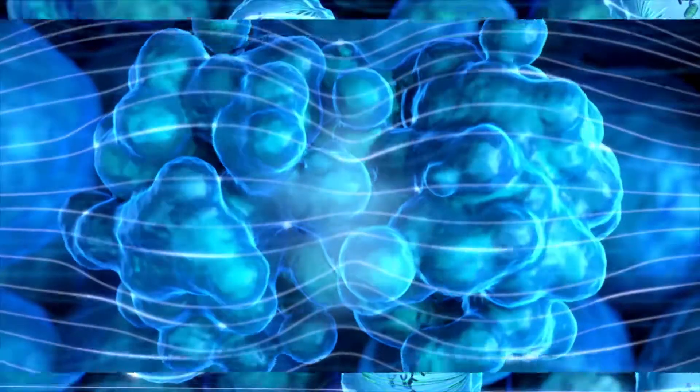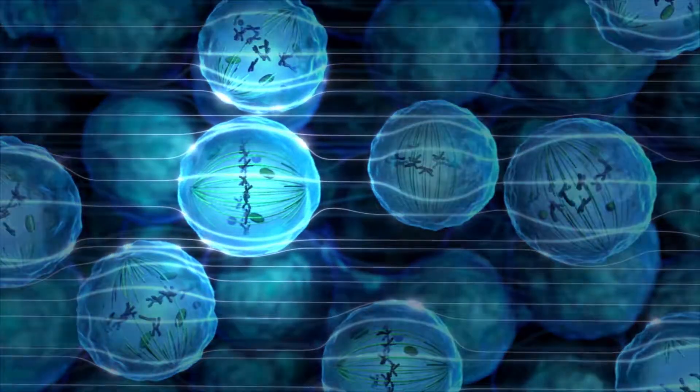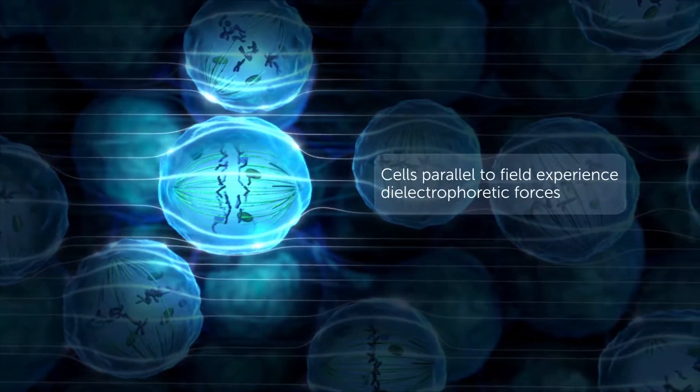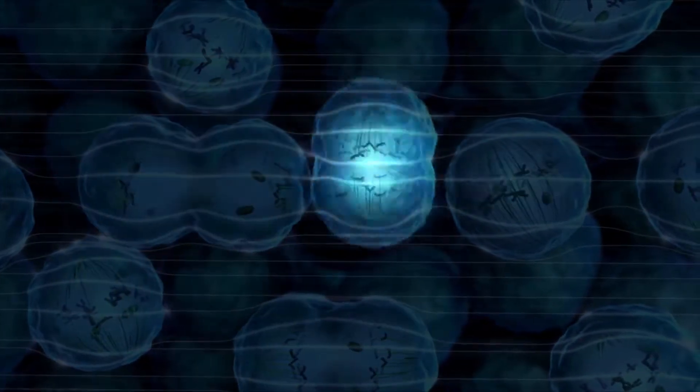The extent of electrical non-uniformity in dividing cells is dependent on the frequency of the TT fields, the electric properties of the cell, and the orientation of the dividing cell relative to the field.